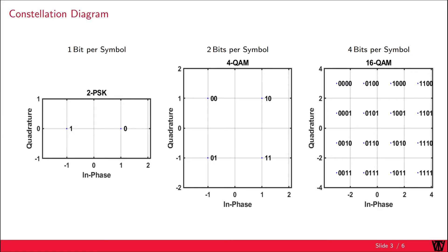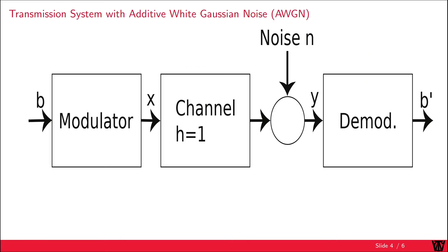If we would like to simulate such a behavior, we would have to introduce some error to the system; otherwise there would always be a correct transmission. One type of error which is present in every transmission system is noise. In our system we want to transmit B bits.